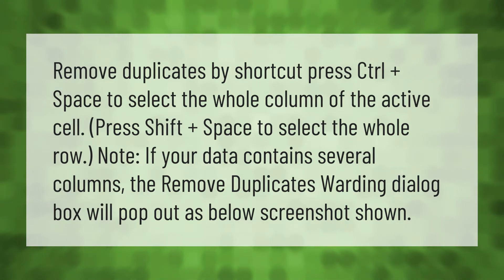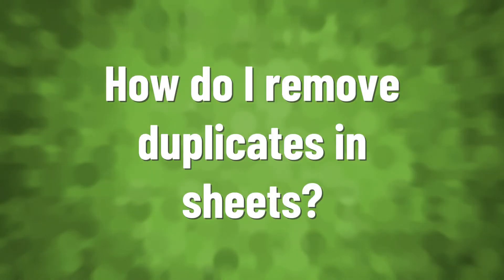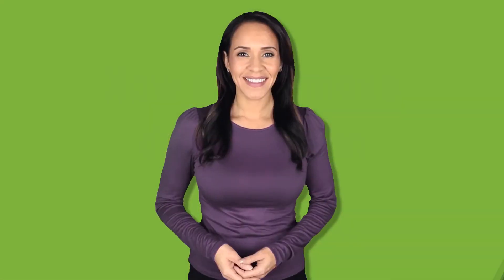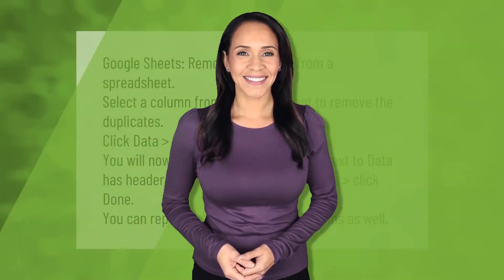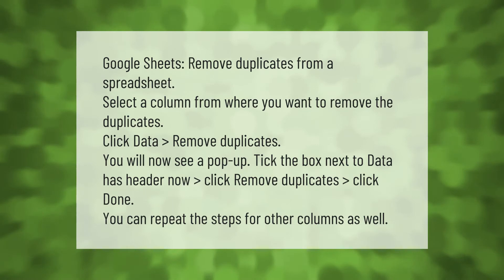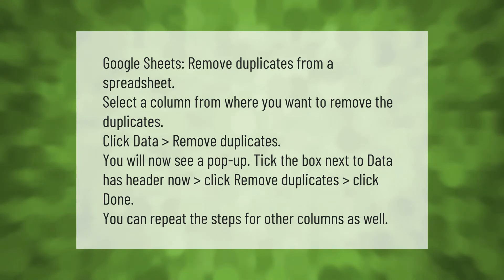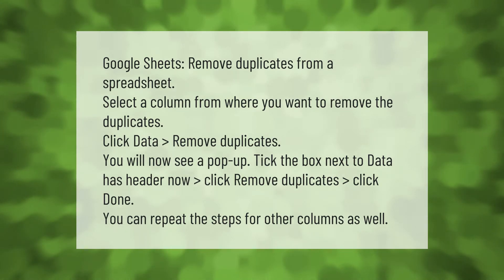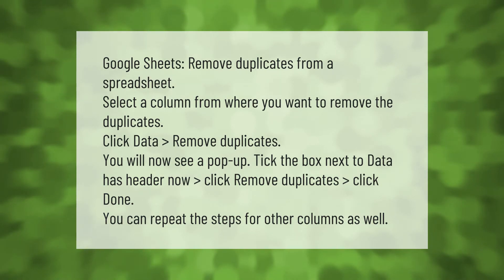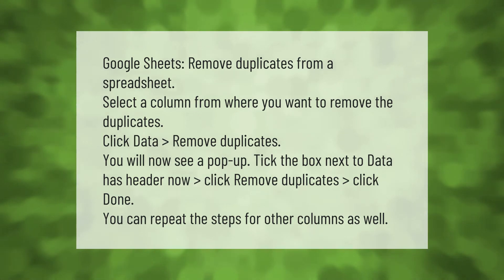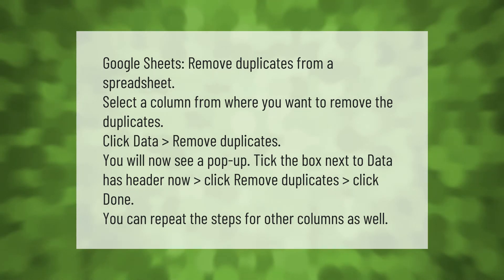In Google Sheets, to remove duplicates from a spreadsheet, select a column from where you want to remove the duplicates. Click Data, then Remove Duplicates. In the pop-up, tick the box next to 'Data has header,' then click Remove Duplicates, then click Done. You can repeat the steps for other columns as well.